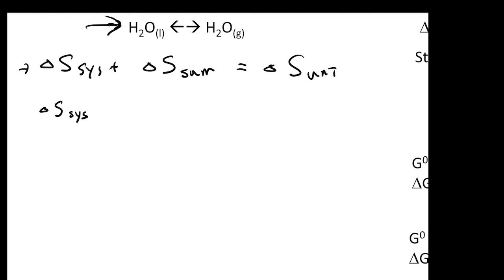If this is going to happen, one thing we can know for sure is that your delta S surroundings will do something. If you want to make your water go from the liquid form to the gas form, what's going to happen is your surroundings will actually provide heat. You heat your water, therefore it can evaporate. So for water to evaporate, we know you need to actually provide that much heat.